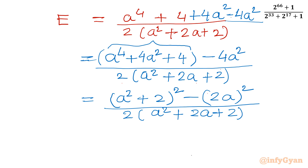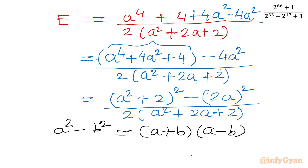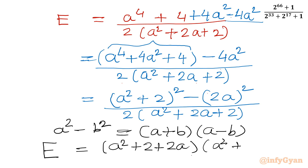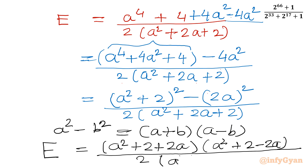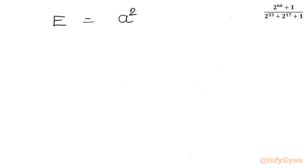In the numerator there is a difference of two squares formula applicable. Using a² − b² = (a + b)(a − b), I write e = [(a² + 2 + 2a)(a² + 2 − 2a)] / [2(a² + 2a + 2)]. These two brackets cancel as they are equal, leaving e = (a² − 2a + 2) / 2.